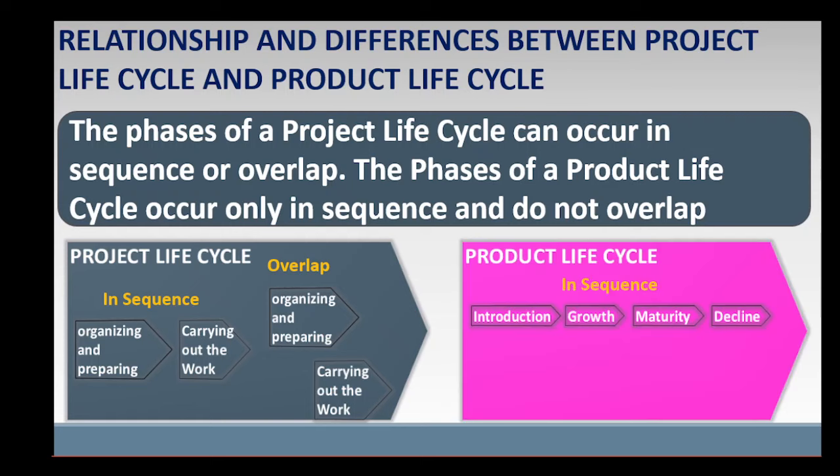The phases of a product life cycle occur only in sequence and do not overlap. In contrast, in a project life cycle, as you are organizing and preparing the work, you can also be carrying out some project work. During its product life cycle, a product such as a specific car cannot be in two phases, such as maturity phase and decline phase, at the same time.